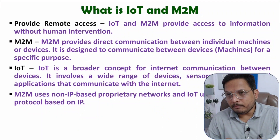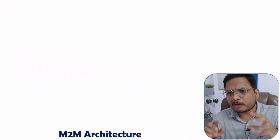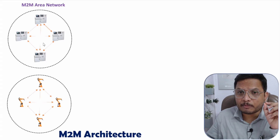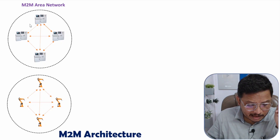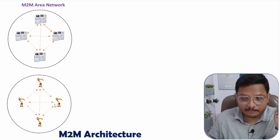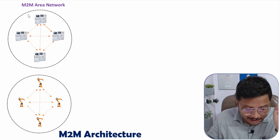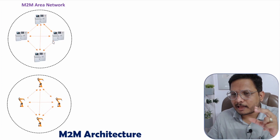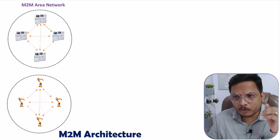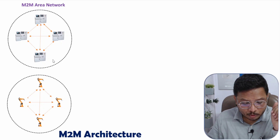Now I'll explain the architecture of the M2M network. In an M2M area network there are machines interconnected with each other using various protocols. There can be a first M2M area network and a second M2M area network, each with machines interconnected. Within an area network, machines can interact using communication protocols like Bluetooth, Zigbee, Wi-Fi, and NFC. However, two different M2M area networks cannot communicate directly with each other.